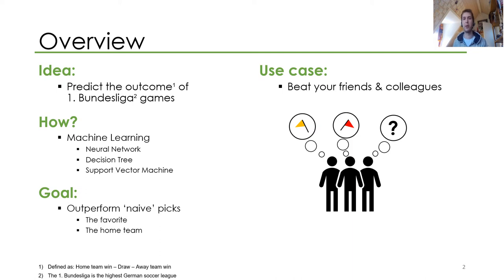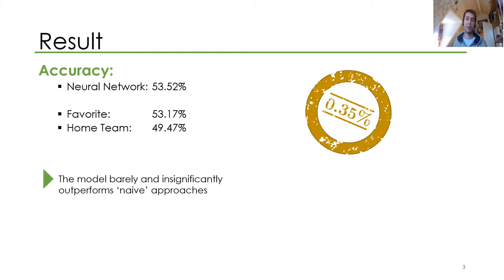The ultimate goal — the use case — is to beat your friends, family, and colleagues, so to predict better than them. The result, presented early: 0.35% is by how much the neural net beats picking the favorite. Obviously that's just marginal and not all that great. At least it outperforms the home team by 4%, but overall it does not seem like a neural net performs any better than picking the favorite.